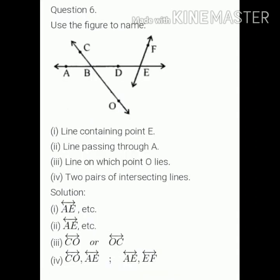Question number six is, use the adjoining figure to name. First part is, line connecting point E. So, you have to name the lines that connect E. So solution is AE, etc.